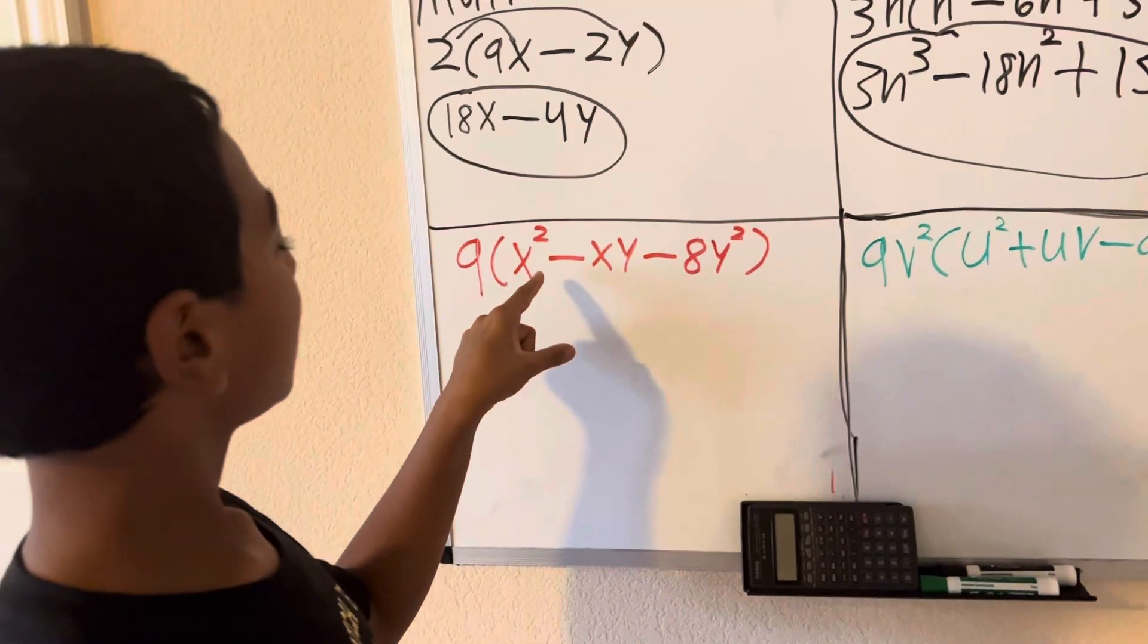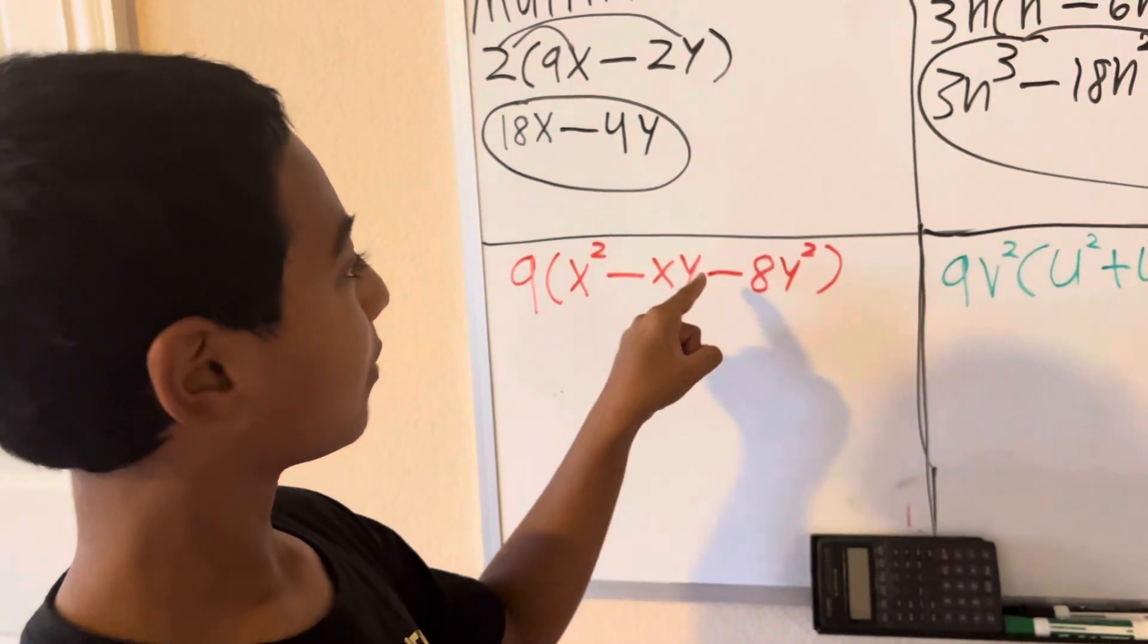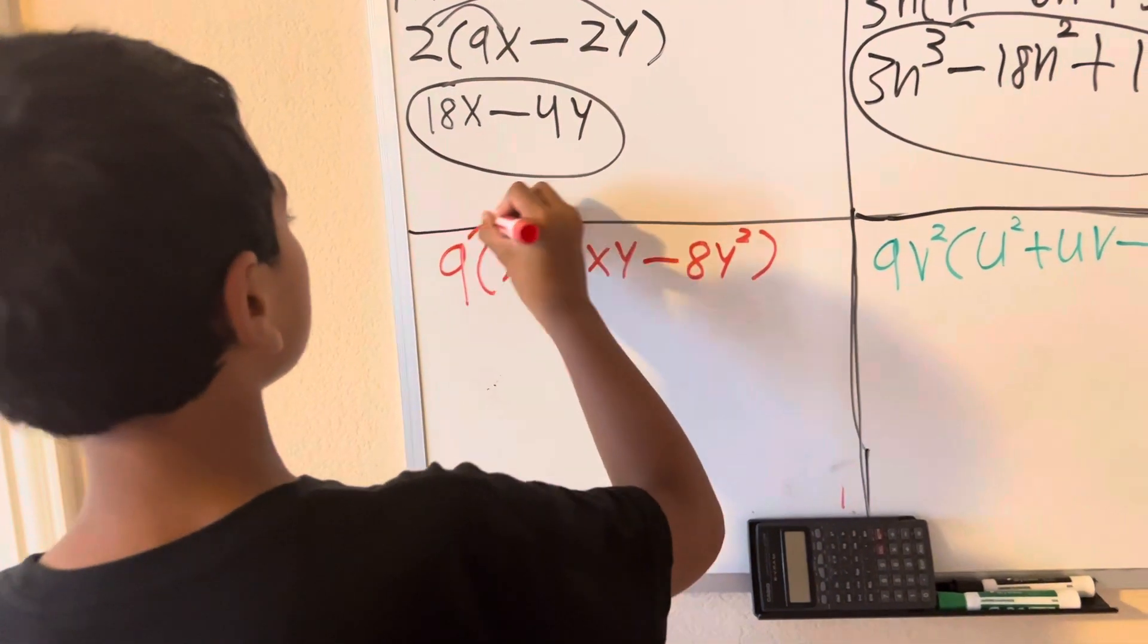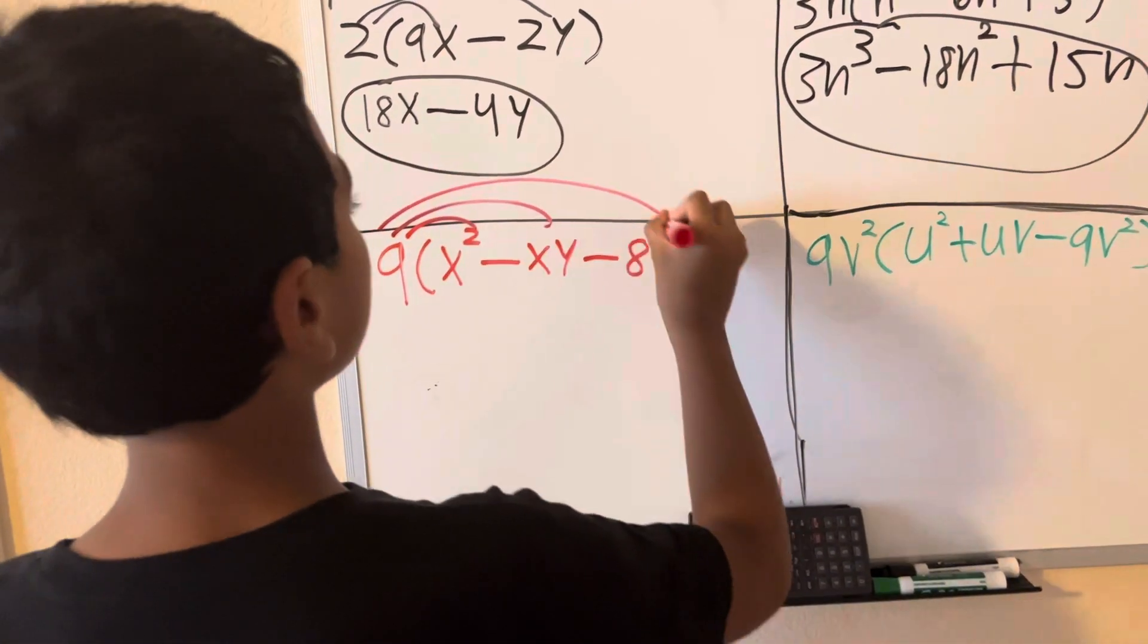we have 9 times x squared minus x times y minus 8y squared. Let's distribute this 9 to all of these terms.